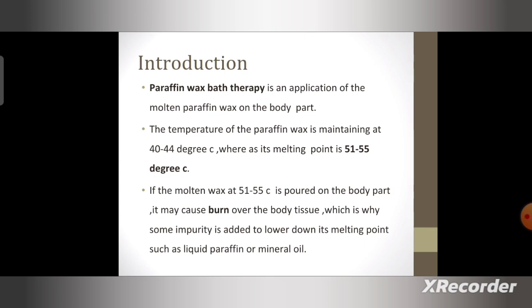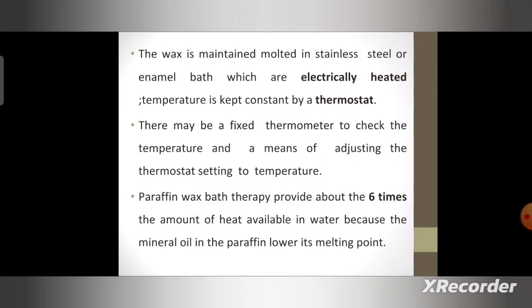If the molten wax at 51 to 55 degrees Celsius is poured on the body part, it may cause burns over the body tissue. This is why some impurity is added to lower down its melting point, such as liquid paraffin or mineral oil. The wax is maintained and molded in stainless steel or enamel baths which are electrically heated, and temperature is kept constant by a thermostat. There may be a fixed thermometer to check the temperature and means of adjusting the thermostat setting.